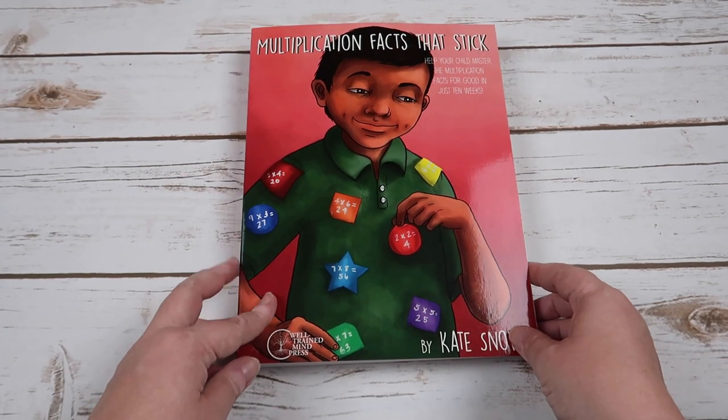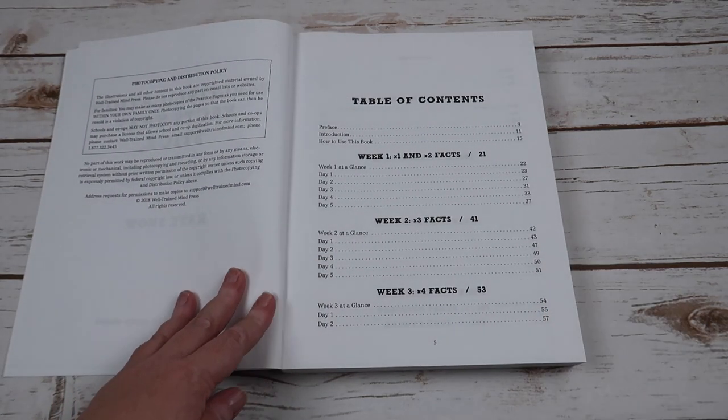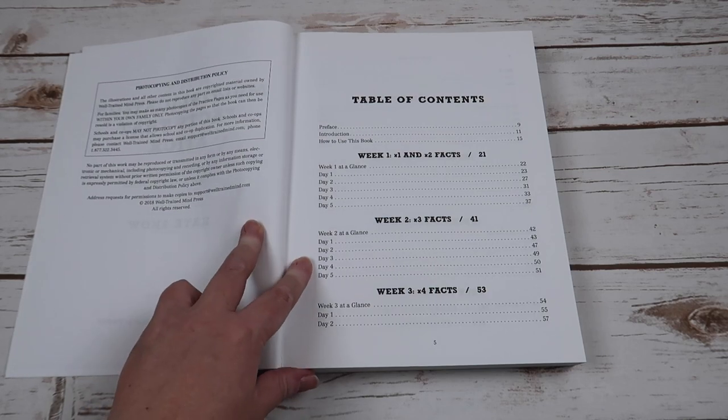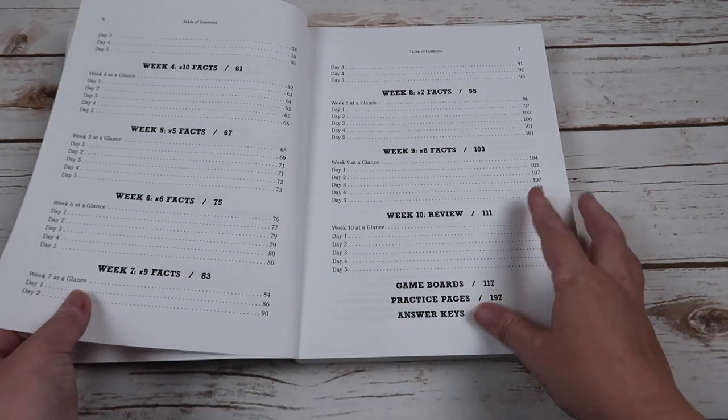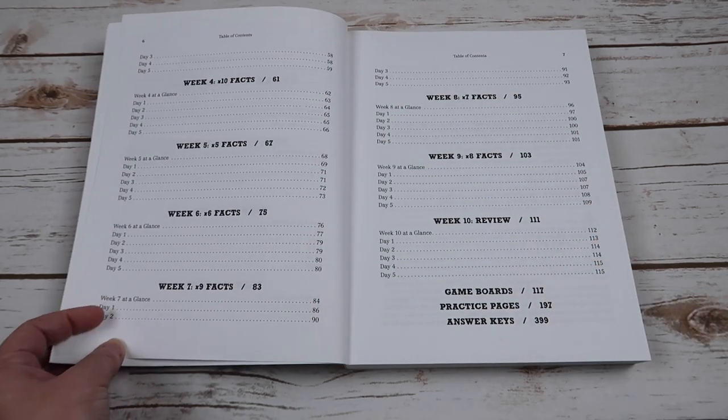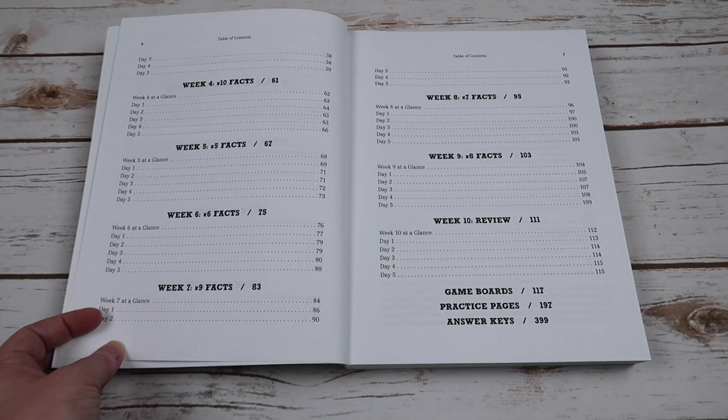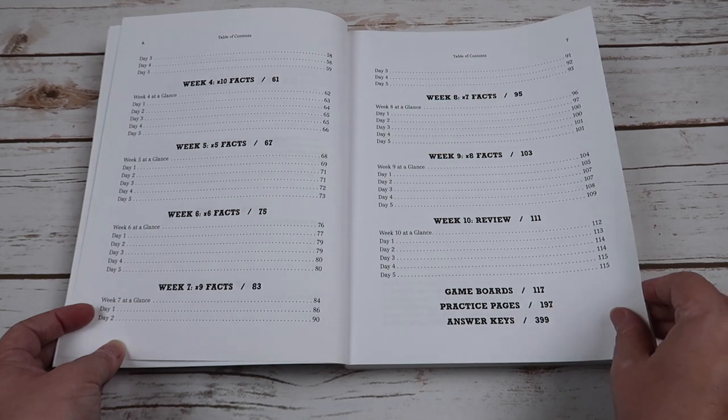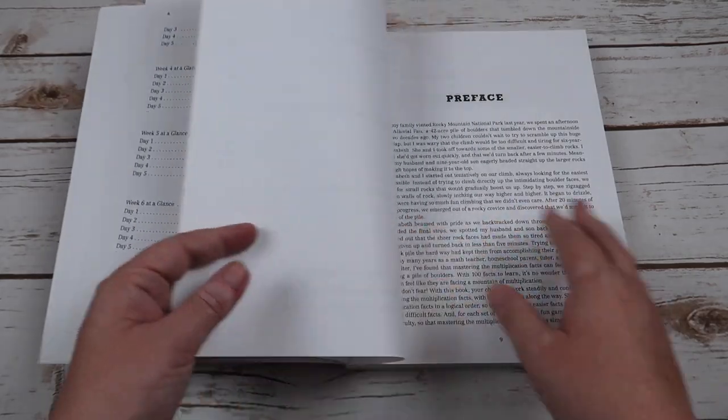So next we have the multiplication facts. So week one is going to be one and two facts. Week two is your times three facts. Week three is times four facts. Week four is times 10 facts. Week five is times five facts. Week six is times six facts. Week seven is times nine facts. Week eight is times seven facts. And week nine is times eight facts. Week 10 is your review.